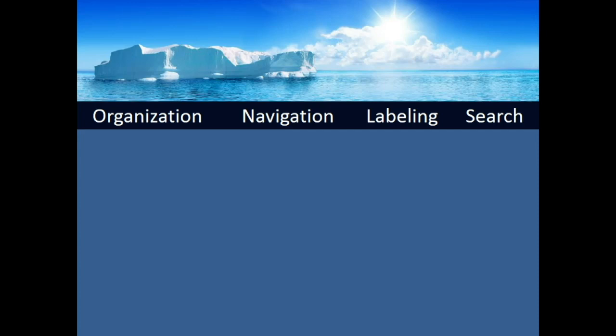In the formative years of information architecture — the late 90s and early 2000s — information architecture became synonymous with organization, navigation, labeling, and search. Thanks to Lou Rosenfeld and Peter Morville, this was central to cementing the idea in the technology community, which led to a boom in the practice and was definitely a missing piece to the ever-expanding puzzle of human-computer interaction.